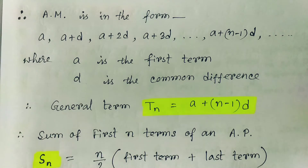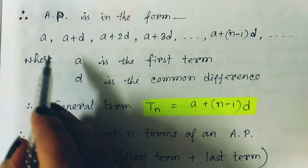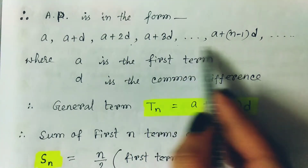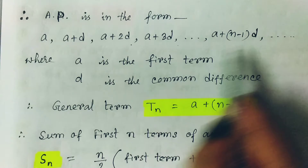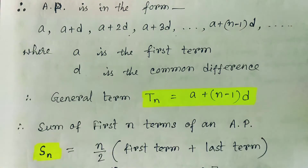We can write any arithmetic progression in the form a, a plus d, a plus 2d, a plus 3d, and so on, where the nth term is a plus (n minus 1)d, where a is the first term and d is the common difference. If we add all those terms, we get the respective series of the arithmetic progression. So if we add all these, what should be the sum?